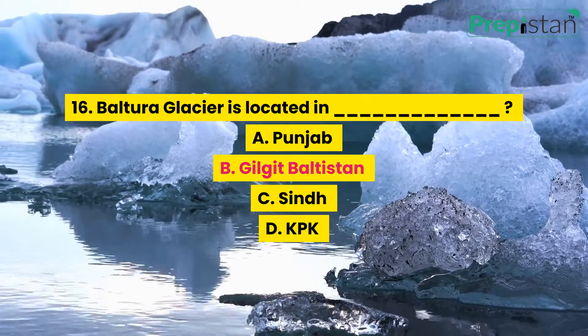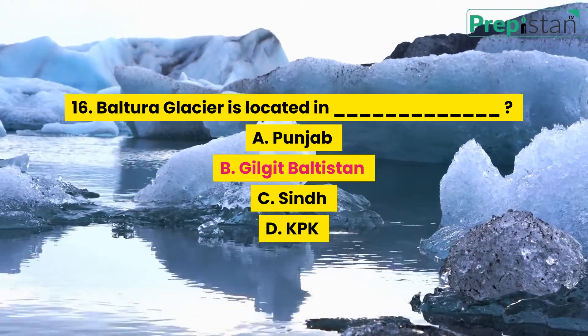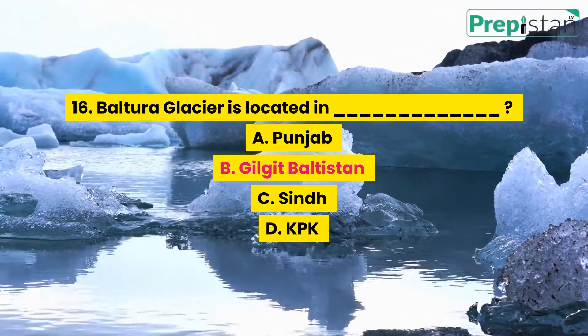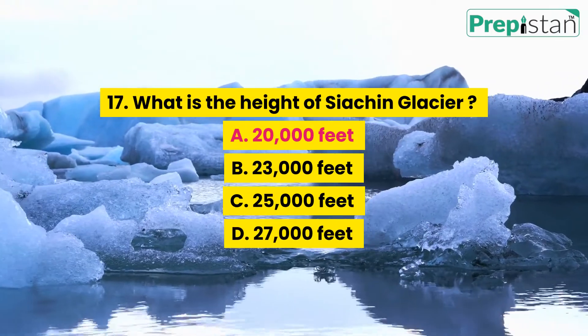Question 16: Baltoro Glacier is located in blank. A. Punjab, B. Gilgit Baltistan, C. Sindh, D. KPK.